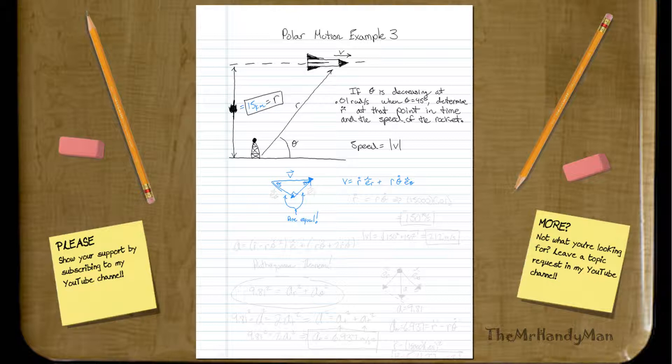So we know that in our situation, this would be theta direction, and this would be r direction. We would know that those two are equal, thus r dot must equal r theta dot.